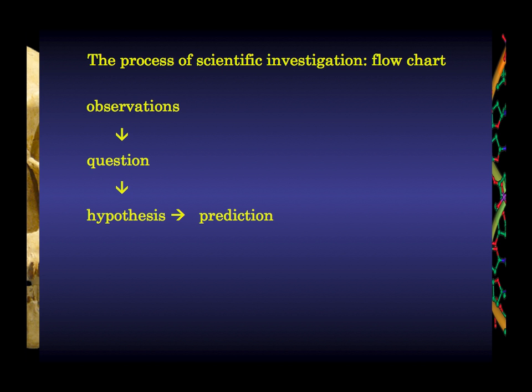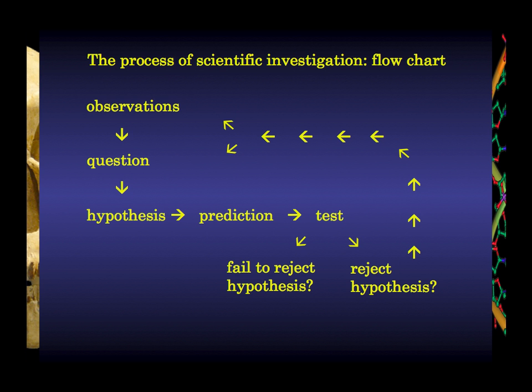Testing can have one of two outcomes: you may either reject your hypothesis — your prediction didn't pan out — which puts you back in the loop where you make new observations, ask new questions, and frame a new hypothesis. Or you may fail to reject your hypothesis. This is important in science: science never offers you proof. Science only offers you the ability to disprove things. You may either reject the hypothesis or tentatively fail to reject it. All that means is that particular hypothesis is supported by experimental evidence.